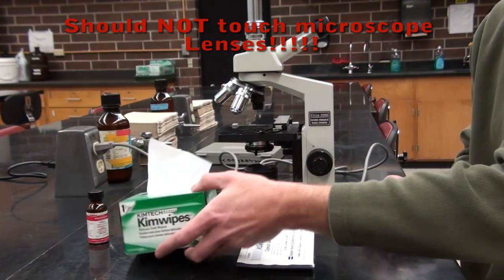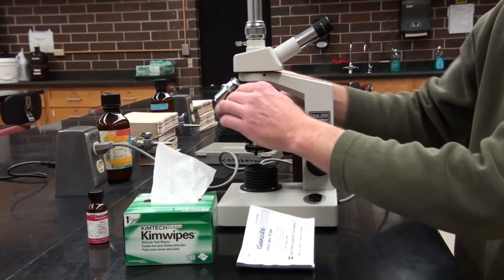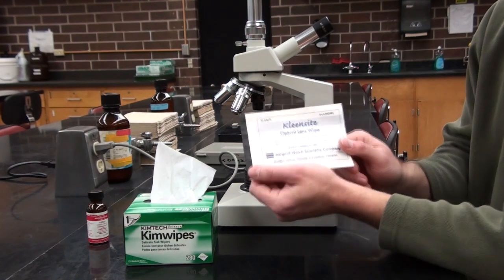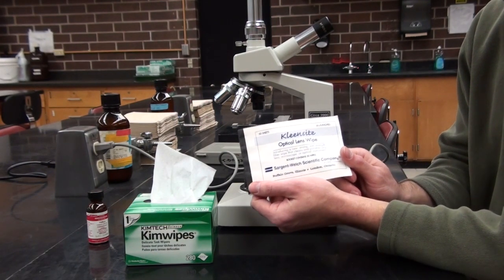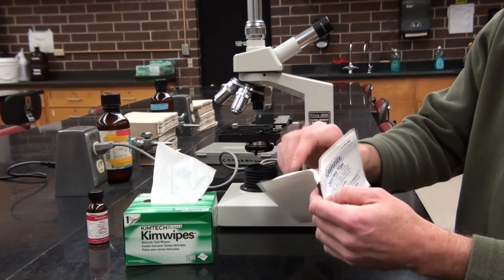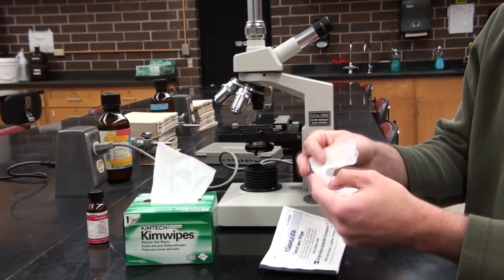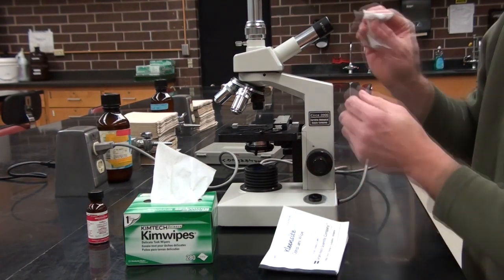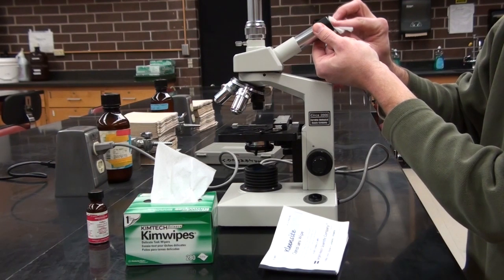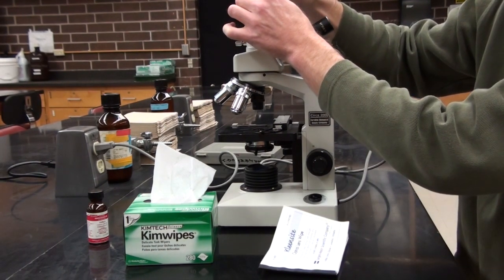If you have anything wrong with the actual microscope, like maybe the eyepiece is dirty, or the objective is dirty, or maybe the condenser, what you'll want to use is what we call an optical lens wipe. To use this, we'll rip out a piece of paper, ball it up a little bit, and in a circular motion gently wipe it. This can get off any oils and different types of things that may be there.